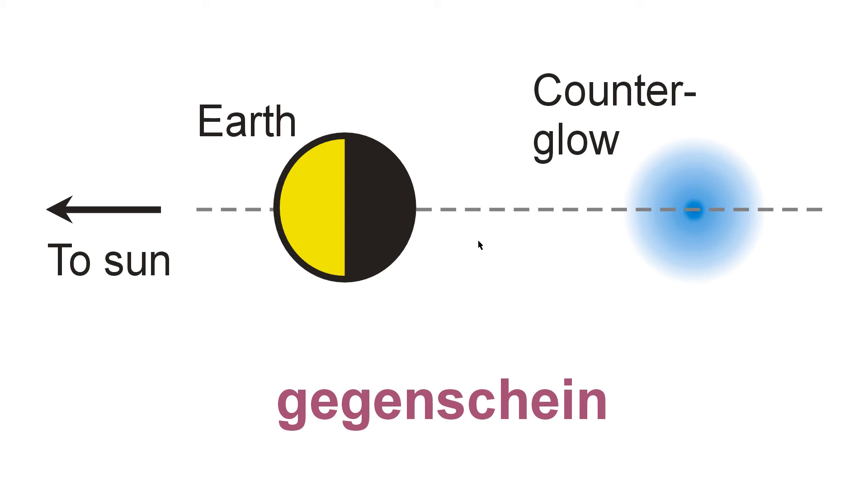You may have also noticed this Gegenschein as you're flying over, say, open fields in an airplane, and you look for the shadow of the airplane. You might not be able to see the shadow of the airplane if you're at sufficient altitude, but you will see the location of that shadow as a Gegenschein on the ground, seeming to move along.